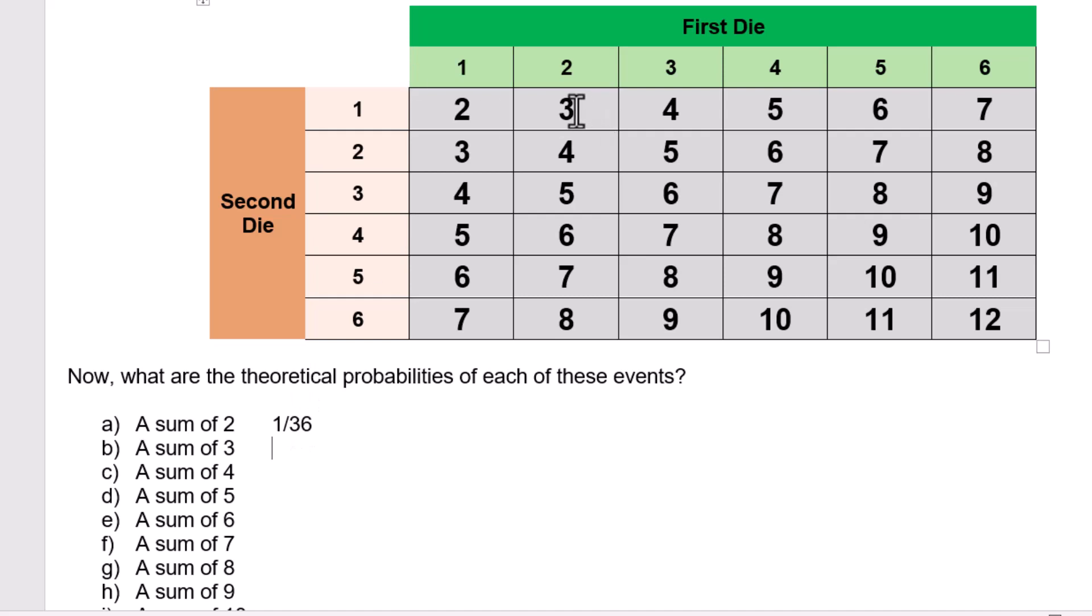Sum of three, well how many ways can you get a three? Well you can get a three this way or this way. And I want you to realize something. Realize those threes are different because you rolled a two here on the green die and a one on the orange die. That's different than rolling a two on the orange die and a one on the green die. They are in two different places on the table. Those are two different outcomes.